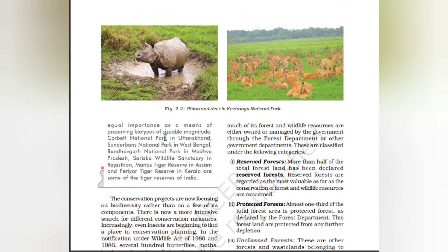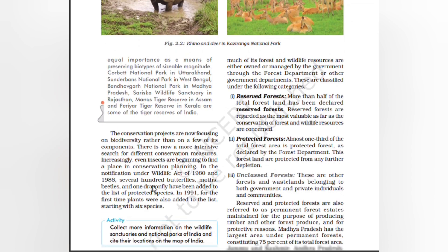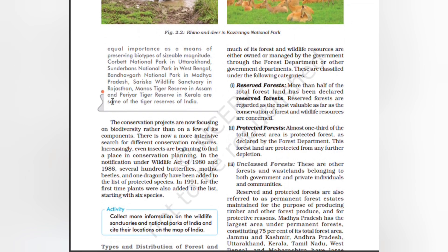Some of the tiger reserves in India include: Corbett National Park in Uttarakhand, Sundarbans National Park in West Bengal, Bandhavgarh National Park in Madhya Pradesh, Sariska Wildlife Sanctuary in Rajasthan, Manas Tiger Reserve in Assam, and Periyar Tiger Reserve in Kerala.